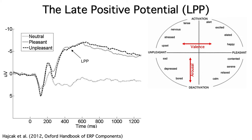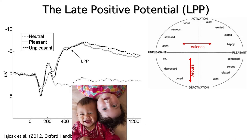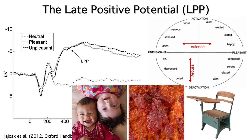In this study, people looked at pleasant pictures like babies laughing, unpleasant pictures like rotting meat, and neutral pictures like desks. Both the pleasant and unpleasant pictures were high in arousal, so both elicited a large LPP.